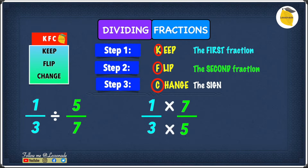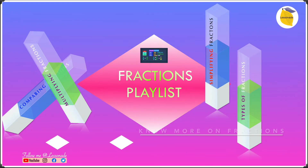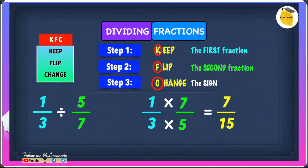So we now have to find 1 times 7 and 3 times 5. 1 times 7 is 7, and 3 times 5 gives you 15. Therefore, the answer to this question is 7 over 15. If you want to know more about fractions, I've got a playlist on fractions, so go check that out.